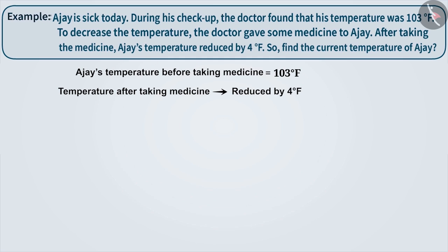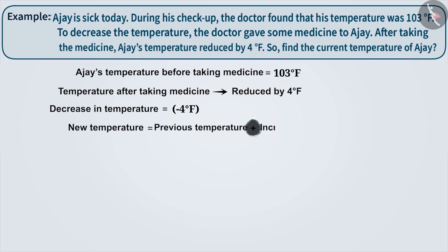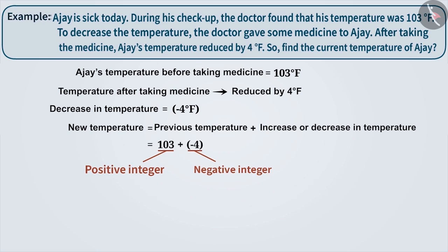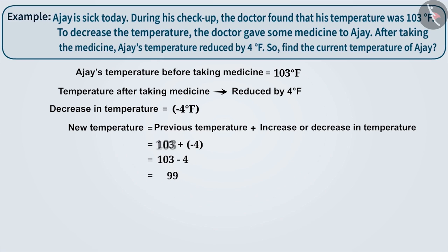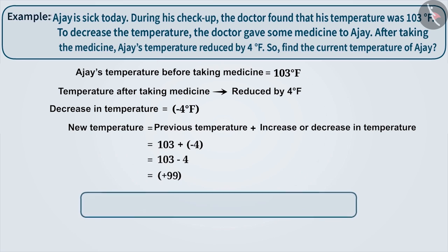Here, we denote the decrease in temperature by a minus sign. Therefore, the decrease in temperature is minus 4 degrees Fahrenheit. To find the new temperature, we add the increase or decrease in temperature with the previous temperature. Therefore, the new temperature will be plus 103 plus minus 4. Here, a positive integer and a negative integer are getting added. To solve this, first subtract the numbers, ignoring the signs, resulting in 99. And since the sign of the larger number is plus, Ajay's current temperature is plus 99 degrees Fahrenheit.